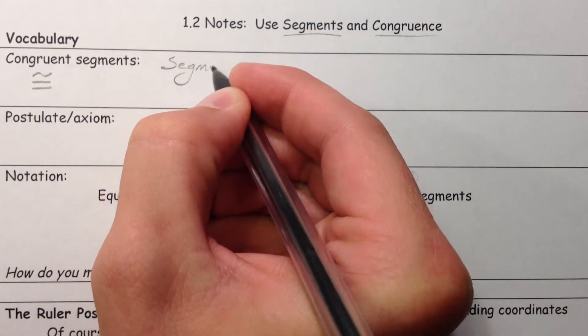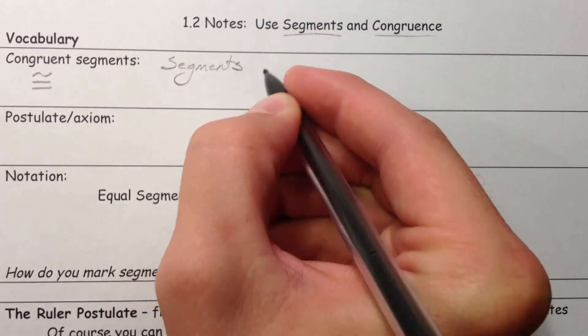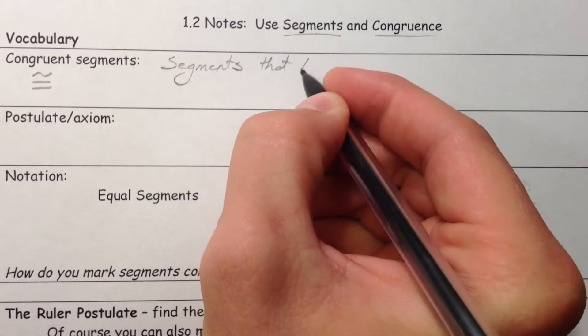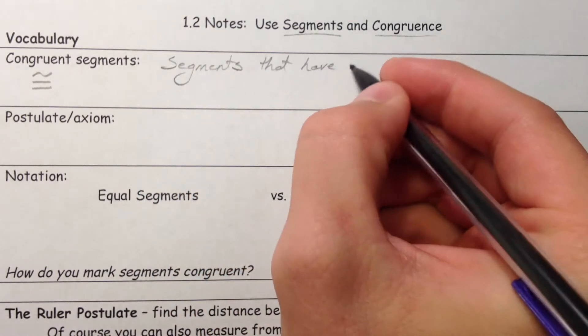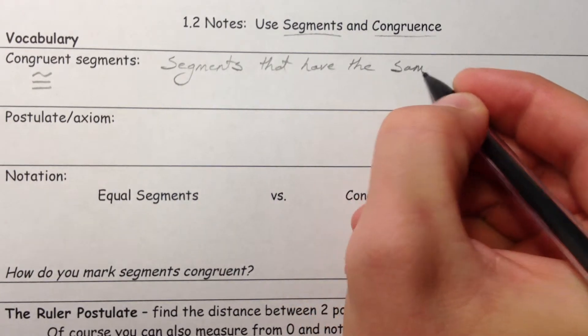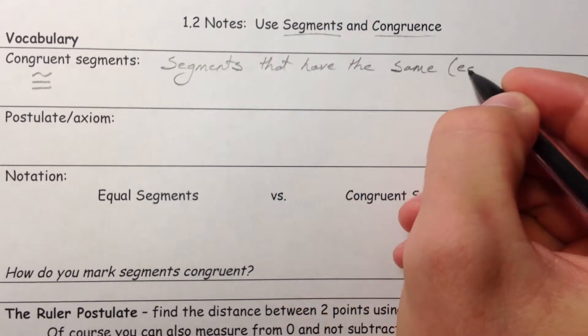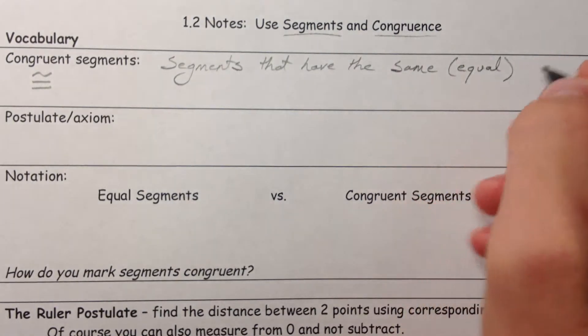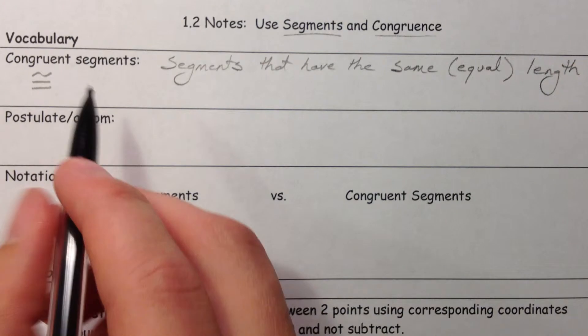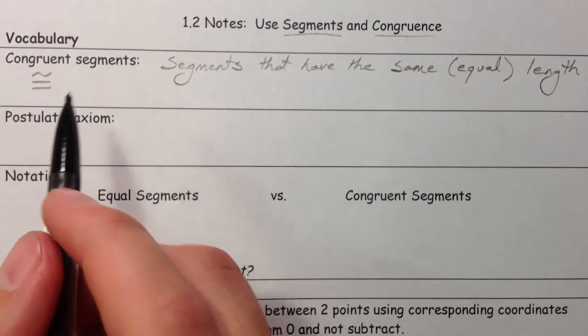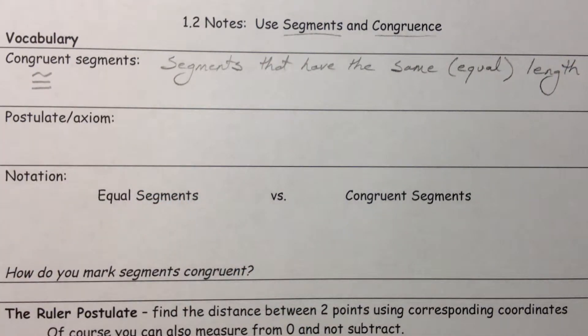Segments that have the same length. So it's important because we don't say segments are equal unless they are the exact same segment. We'll get into that in just a little bit.